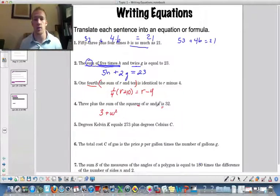Sum of the squares, so it's saying you square w and square x. So this is the sum of those squares. 3 plus that is 32.